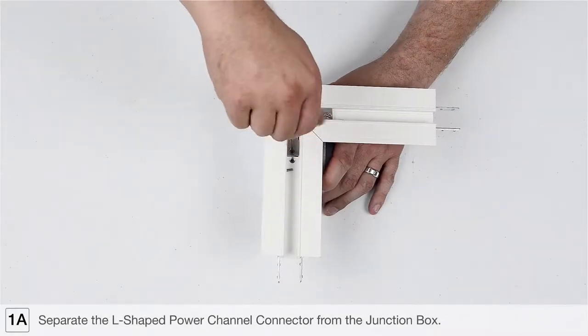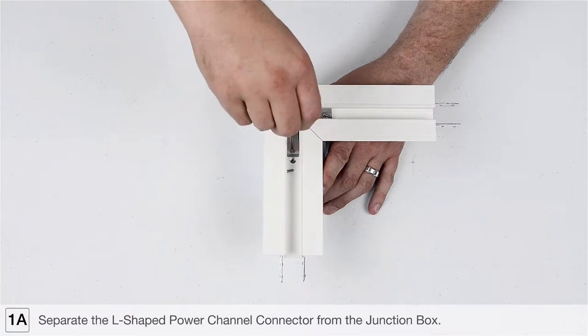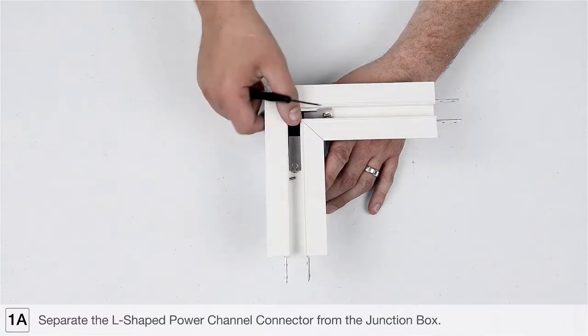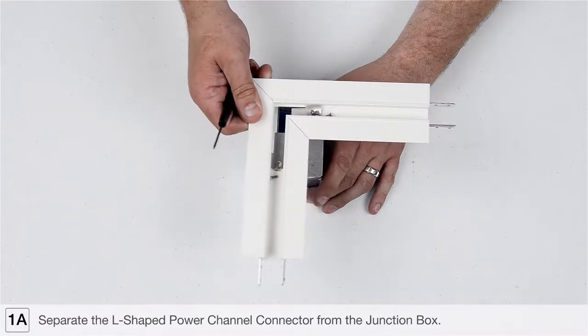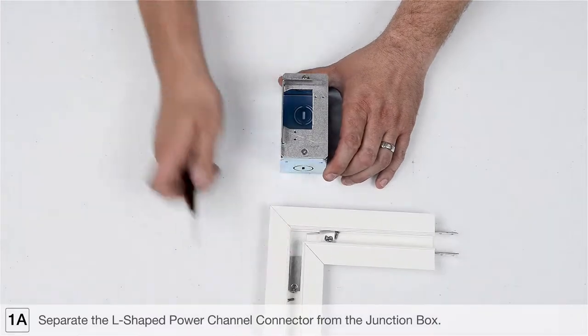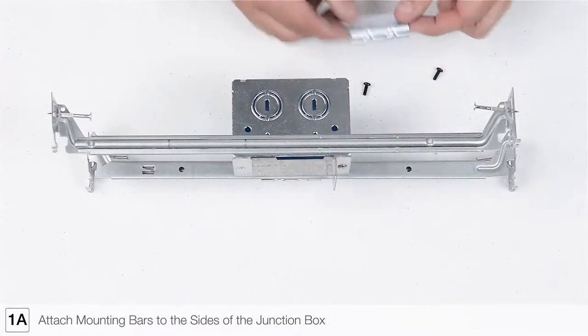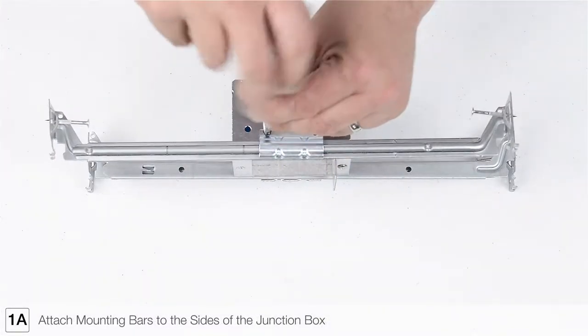Each system is supplied with at least one power feed junction box. Separate the L-shaped power channel connector from the junction box. Attach the supplied mounting bars to the side of the junction box as shown.